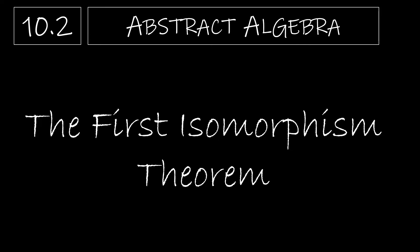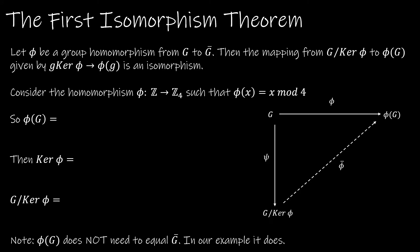Let's finish out chapter 10 by taking a look at the first isomorphism theorem. This theorem tells us that if phi is a homomorphism from G to G bar, then we're going to have a mapping from G mod the kernel of phi to phi of G, given by g·ker(φ) maps to phi of g, and that mapping is an isomorphism. It's a lot of phi's and G's and kernels, so it makes more sense with a concrete example.